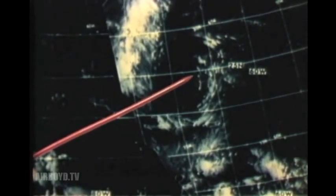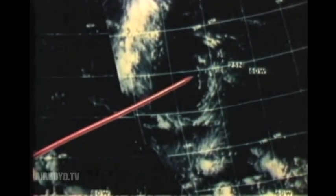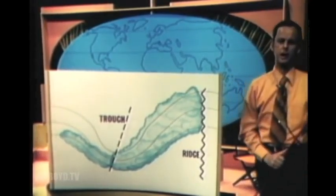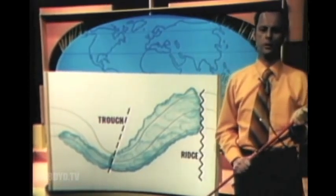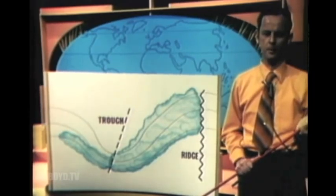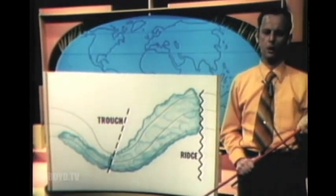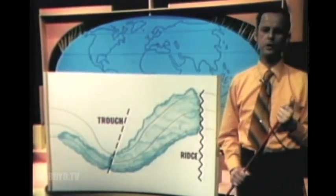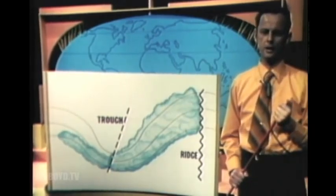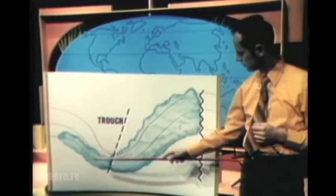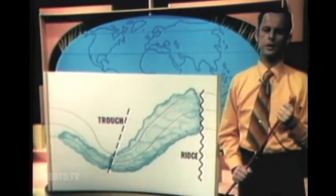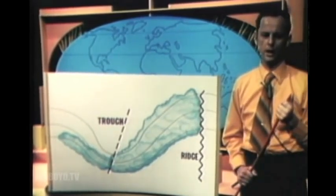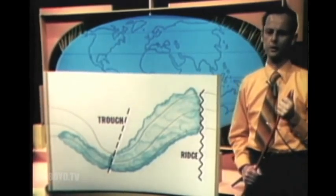Now let's look at middle clouds and examine the flow pattern at 500 millibars. From our textbooks, we know that we have divergence at approximately 500 millibars between a trough and the next ridge downstream. This will result in net upward vertical motion in this area. Here, between the ridge and trough, we have a region of net downward motion. These regions of upward and downward motion are reflected in the cloud patterns, allowing us to locate the ridges and troughs at approximately 500 millibars.